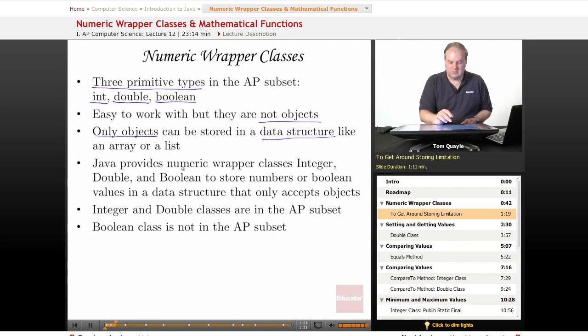So to get around this limitation, Java provides something called Numeric Wrapper Classes, which are classes that work like primitive types, but they are objects. So they can be stored anywhere you can store an object. For an int value, Java provides an Integer wrapper class with a capital I. For double, they provide a Double with a capital D. And for boolean, they provide a Boolean wrapper class with a capital B. And these wrapper classes allow you to store numbers or boolean values in a data structure such as an array or list that only accepts objects.